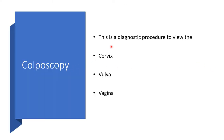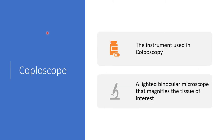Colposcopy is a diagnostic procedure meant to view the cervix, the vulva, and the vagina — so not only the cervix. The main instrument here is the colposcope. It is a lighted binocular microscope that has the capability to magnify the tissue of interest.